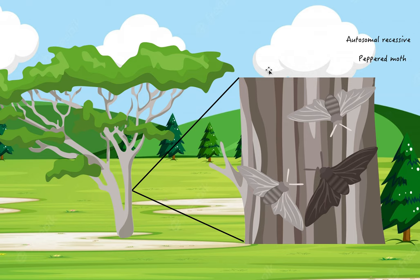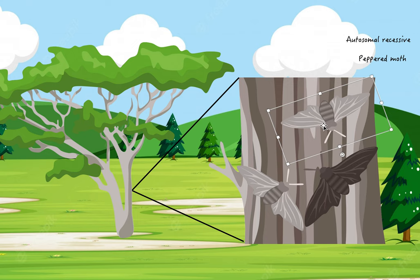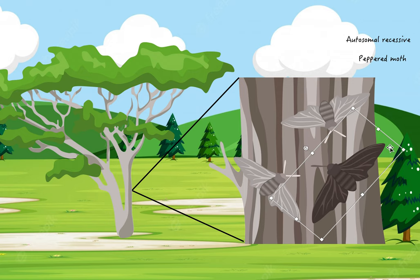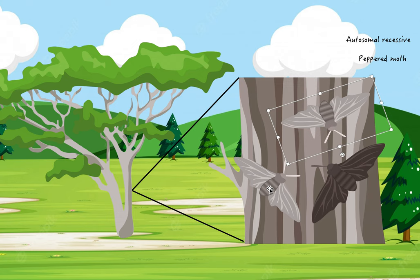Now, if we look at this tree bark, we zoom into this tree, we notice that the moths that survive the best are these white, grayish ones, because they camouflage really well on the bark of the tree. Whereas these black ones stand out much more, and because they stand out much more, they can very easily be seen by birds and therefore eaten.